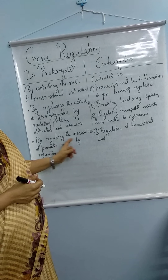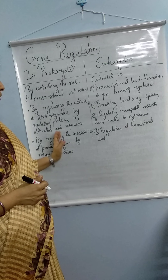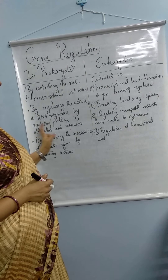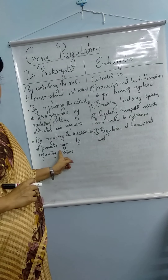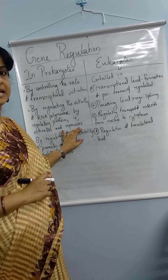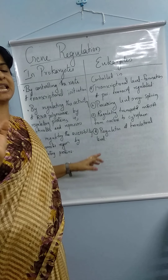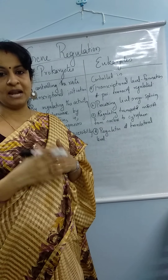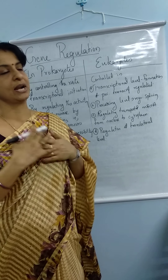The next step is by regulating the accessibility of the promoter region by regulatory proteins. The RNA polymerase activity controlled by activators and repressors is important here. Sometimes the promoter region will become accessible and the process will start; other times, when repressors are binding, the process will not happen.